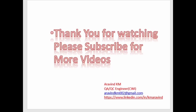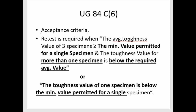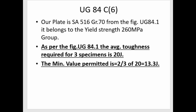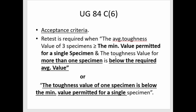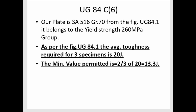So, the average value from graph UG 84.1 is 20 joules, and the minimum value permitted for a single specimen is two-thirds of the average value — that is, 2/3 × 20 = 13.3 joules. Our required average value is 20 joules and the minimum value permitted is 13.3 joules. These are the two important terms we must use.